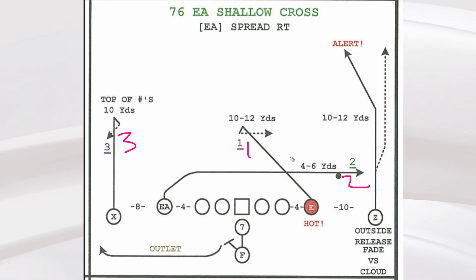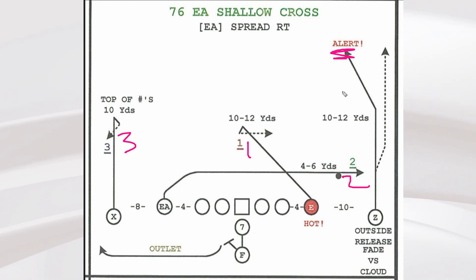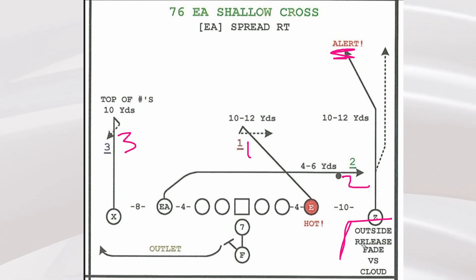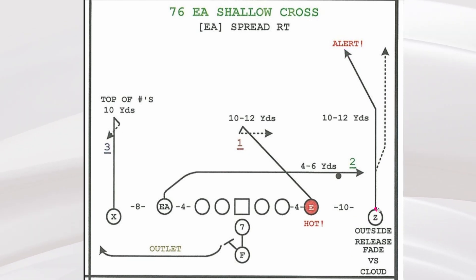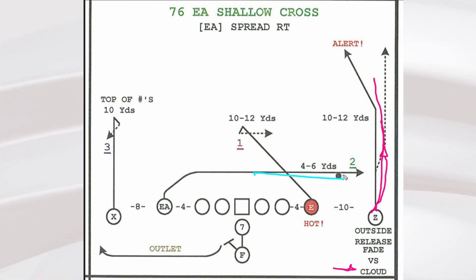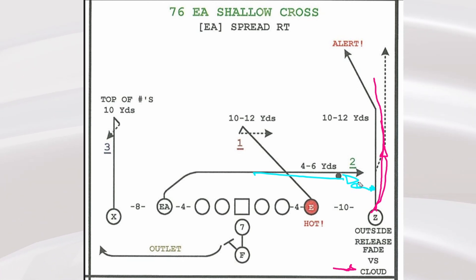Now, the other part about this play — and really one of my favorite parts — is just the alert. We've got an opportunity versus quarters to be able to hit this alert. I've seen it thrown versus zero as well in the red area. The other part about this post is that it's a learned outside release more here versus any sort of cloud. That means we must go outside the corner and it converts to a fade. Why? Because a cloud is not going to be versus quarters, and you're not going to get the ball. But we need you to turn that corner's eyes because we've got this shallow running right to him.